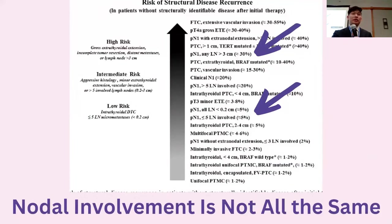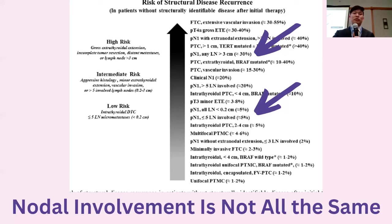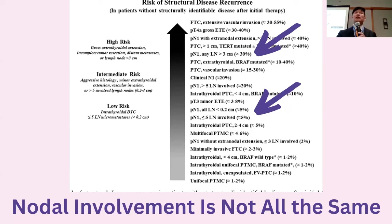I want to add a quick caveat: not all nodal involvement is the same. About 30% of all patients present with nodal disease, but not all of those 30% have a poor prognosis. The American Thyroid Association graph estimates the risk of recurrence. When you have lymph node disease with fewer than five lymph nodes involved or all very small — less than 0.2 centimeters — the risk of recurrence is still about 5%, fairly low. But a lymph node grown to more than three centimeters raises the risk of recurrence to 30%. So I don't want to give the impression that all nodal involvement is bad.